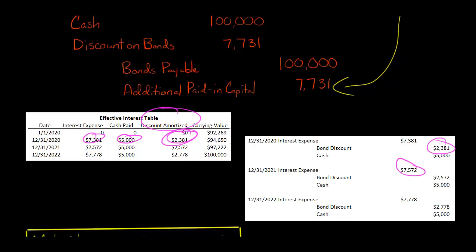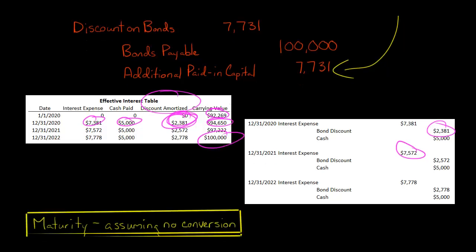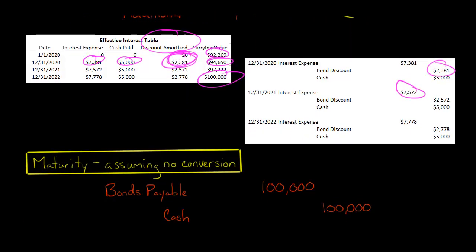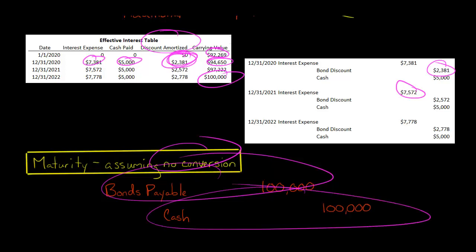The interest expense can differ each period because we multiply the updated carrying value — which increases as the discount is amortized — by 8%. We eventually get to $100,000, which is what is ultimately paid back, assuming the bondholder doesn't elect to convert to common shares. When the bond matures, we debit Bond Payable for $100,000 and the company credits Cash for $100,000 as it repays the creditor.